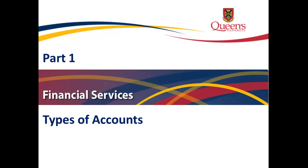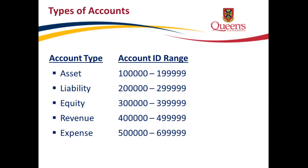Part 1: Types of Accounts. Types of accounts at Queen's include asset accounts, those that begin with 1; liability accounts beginning with 2; equity accounts that begin with 3; revenue accounts beginning with 4; and expense accounts that begin with 5 or 6.